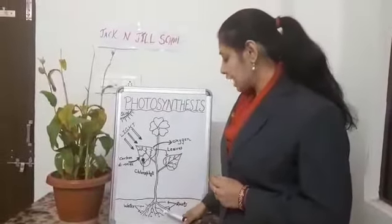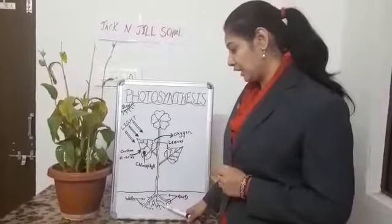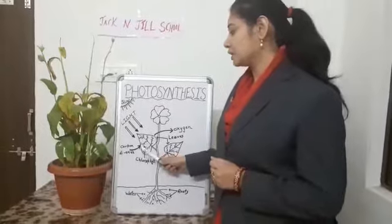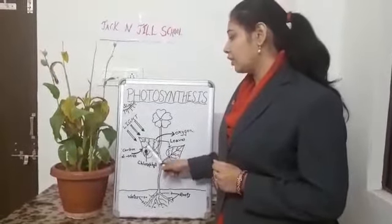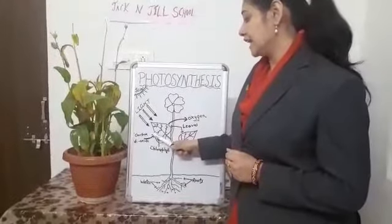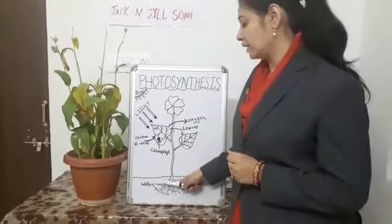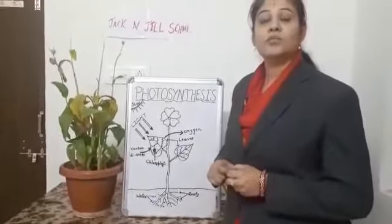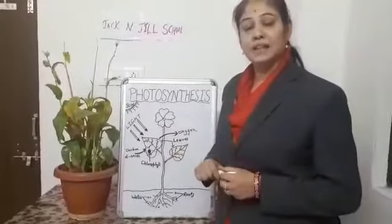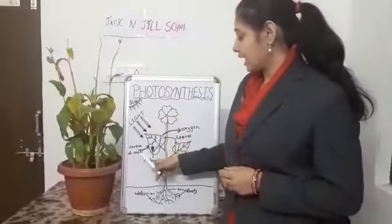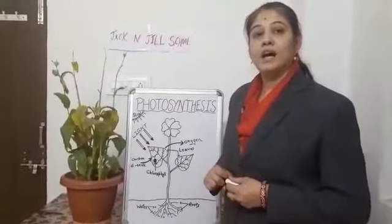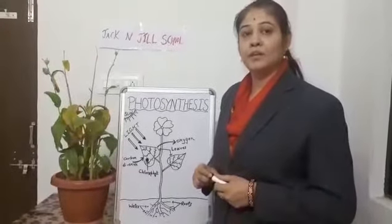Roots absorb water from the soil. The leaf takes carbon dioxide from the air. In the presence of sunlight, leaves change carbon dioxide and water into food in the form of sugar. Sunlight, carbon dioxide, water and chlorophyll are needed by leaves to prepare food.